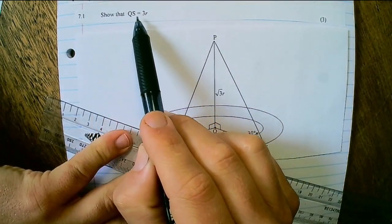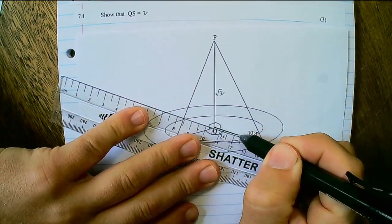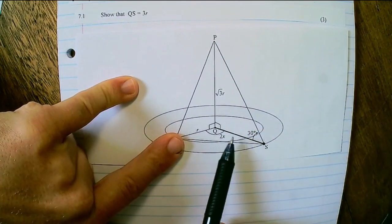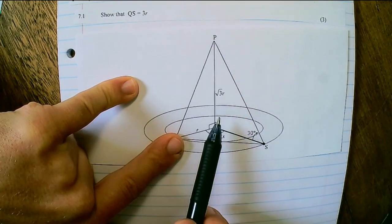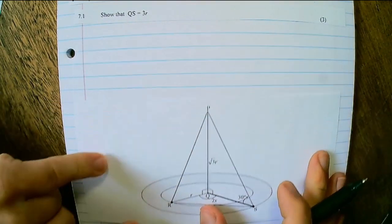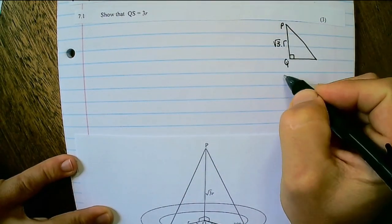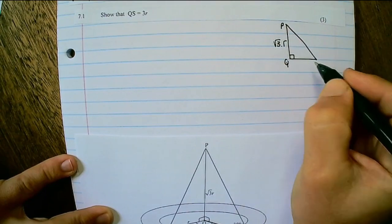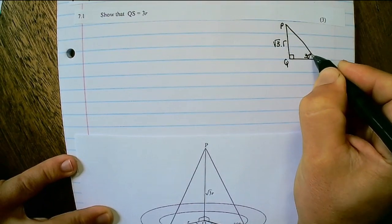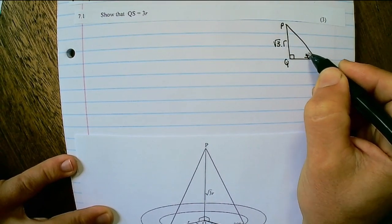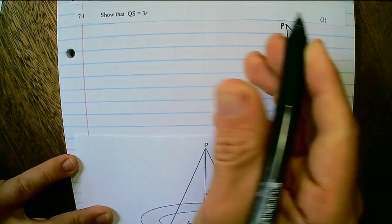So here we have 7.1. Show that QS is 3R. So here we have QS. And you can see QS is a side of the triangle PQS. So if I draw it in a two-dimensional way, I have PQ as square root 3R. And we have the angle of S to P as 30 degrees with the horizontal plane. Now that's enough information for us to use tan to find QS.